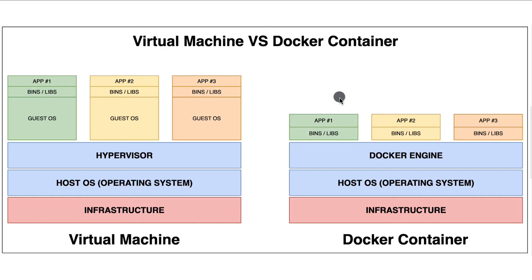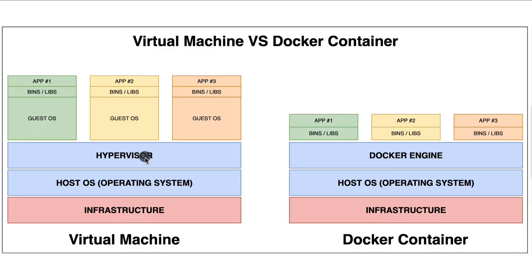Docker and virtual machines are both technologies that provide isolated environments for running applications, but they differ significantly in implementation and resource usage. Regarding architecture, Docker uses containerization where applications are packaged with their dependencies in lightweight portable containers. Docker relies on the host operating system and kernel features like namespaces and cgroups to isolate containers and manage resources. Virtual machines use hardware-level virtualization where each VM has its own operating system, libraries, and application binaries, managed by a hypervisor.